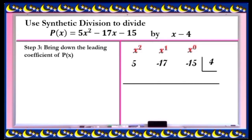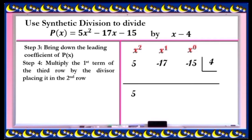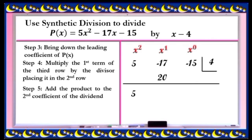Step 3: bring down the leading coefficient of p(x). Here, our leading coefficient is 5. Step 4: multiply the first term of the third row by the divisor, placing it in the second row. That is 5 times 4 equals 20. Step 5: add the product to the second coefficient of the dividend. So we have negative 17 plus 20 equals positive 3.